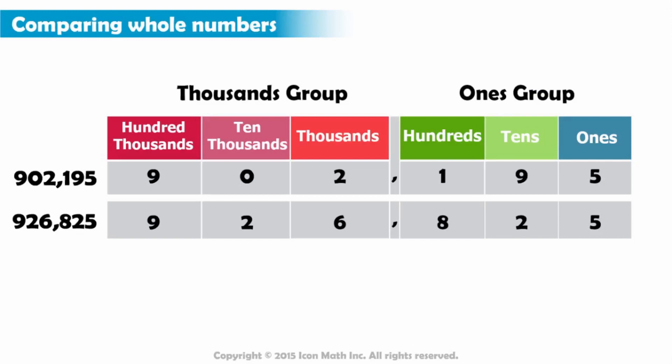We need to compare the digits in the same place value from both numbers until we find two unequal digits. We start comparing the digits on the far left because they represent the greatest value. And in both numbers, the digit that is farthest to the left is in the hundred thousands place.